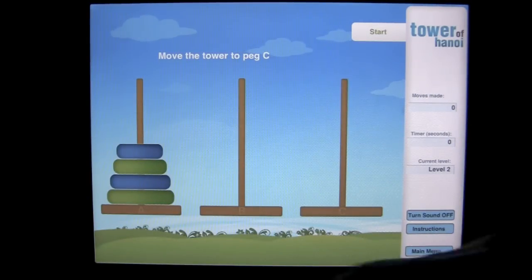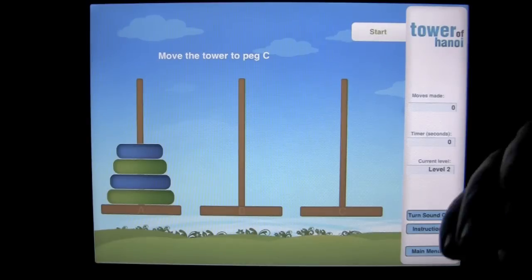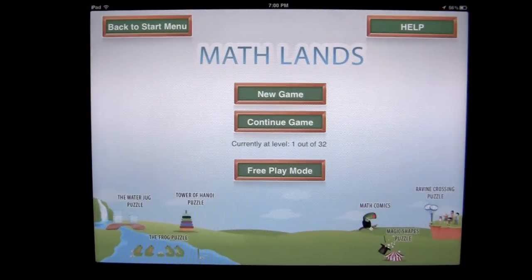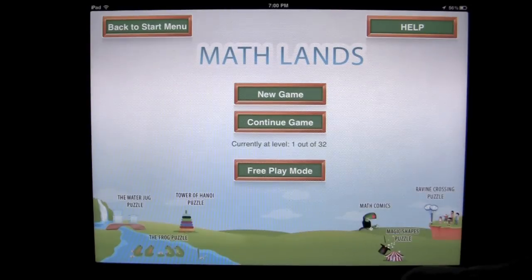Now you have four rings to move to peg C. You can tap on the instructions and you can tell we are on level two. There are 30 plus levels in this game. Tap on the main menu and you can see we are currently at level one out of 32. That is how you play the level mode.